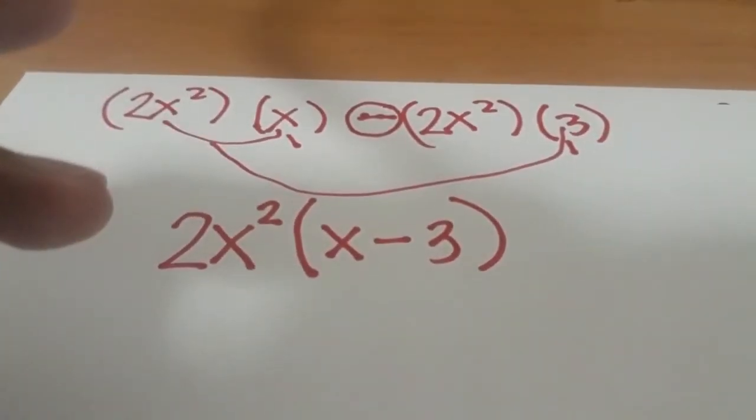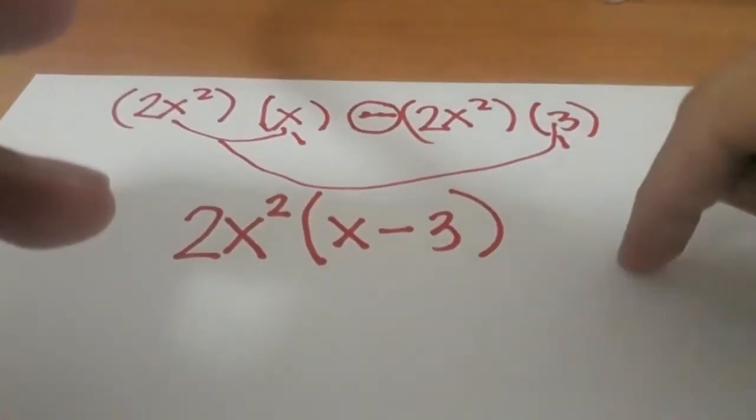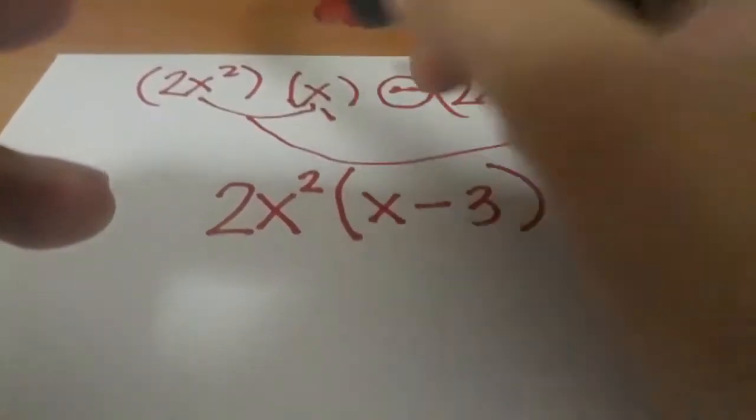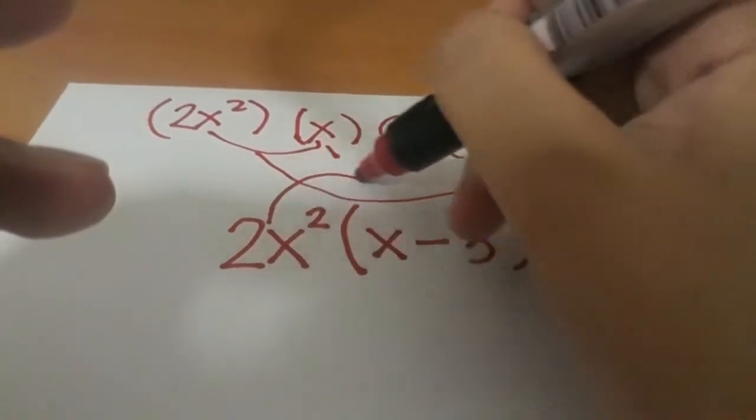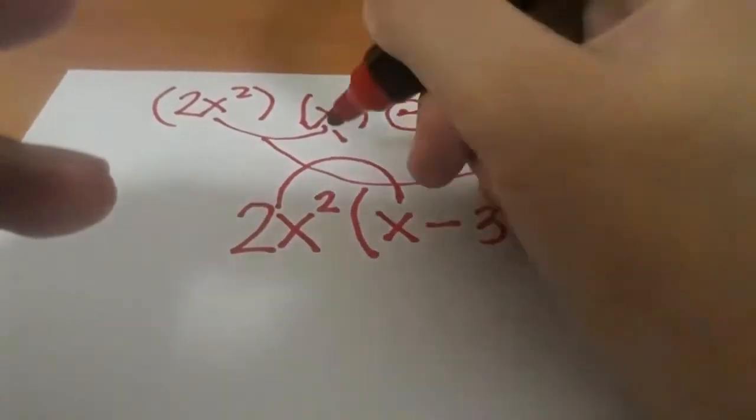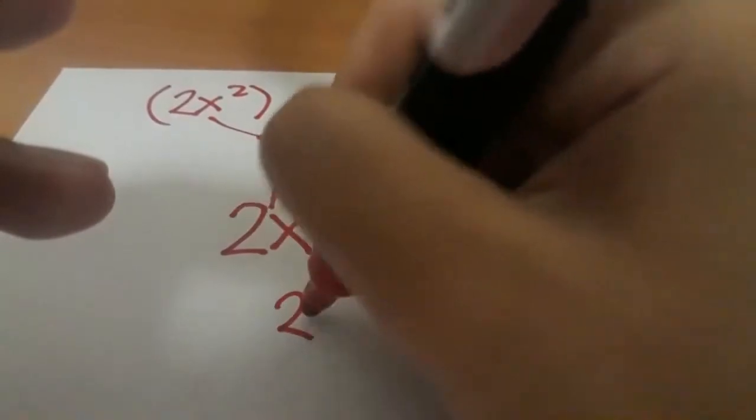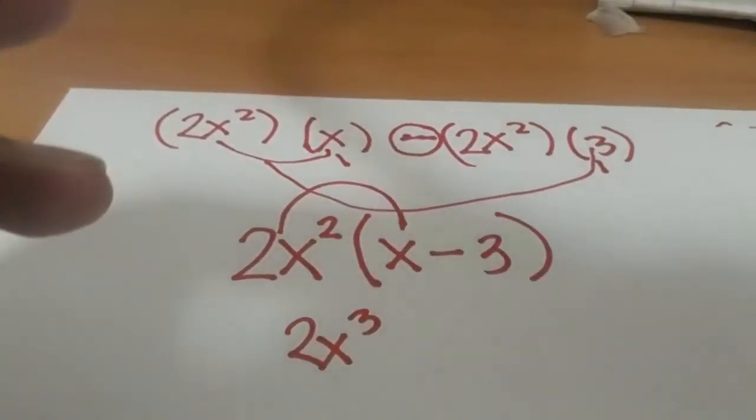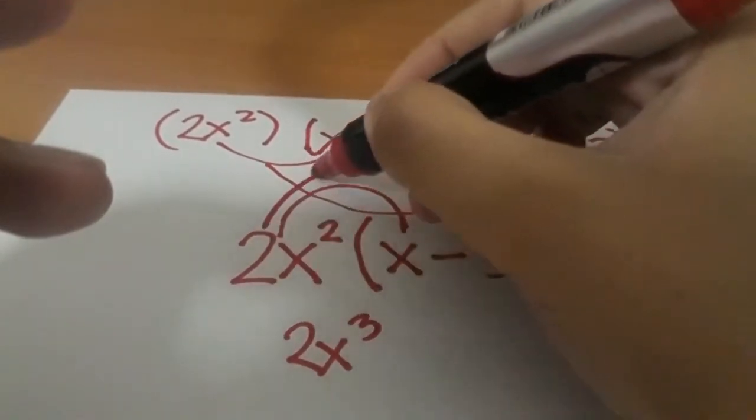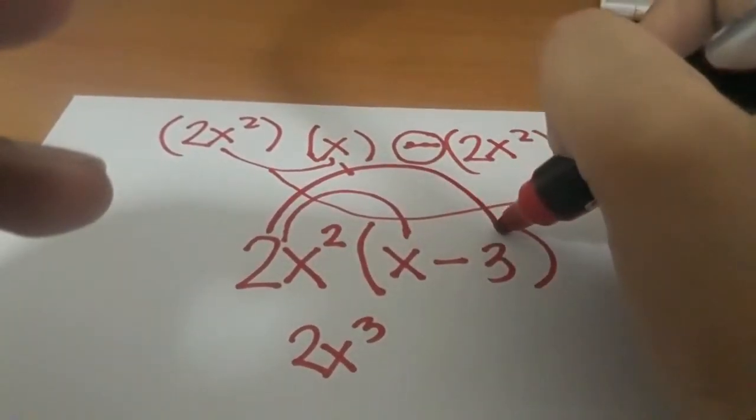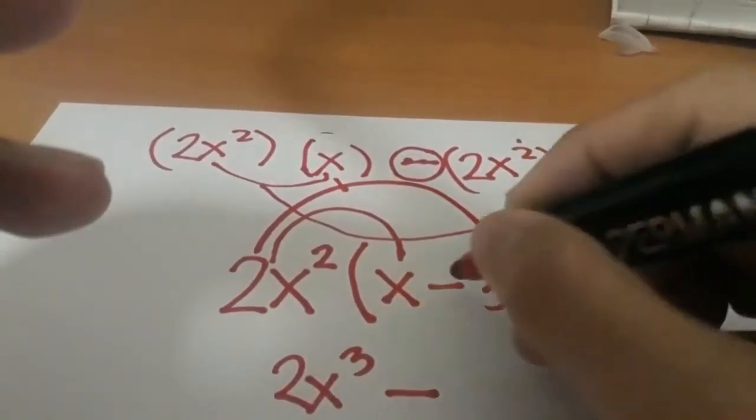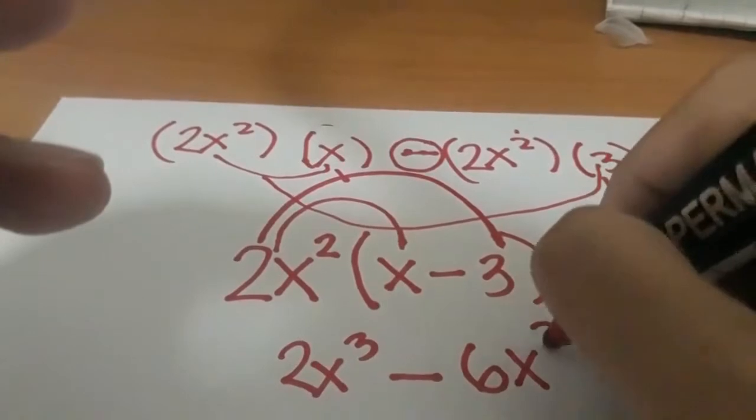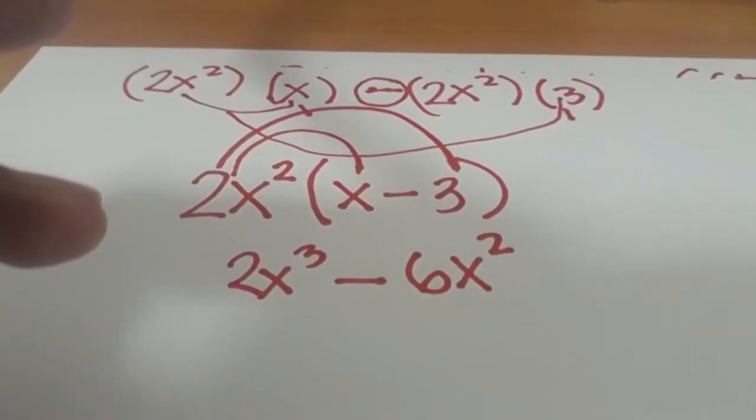How do we know that we've got the correct one? We verify by checking using the distributive property. 2x² times x is 2x³, and 2x² times negative 3 is -6x². There you go.